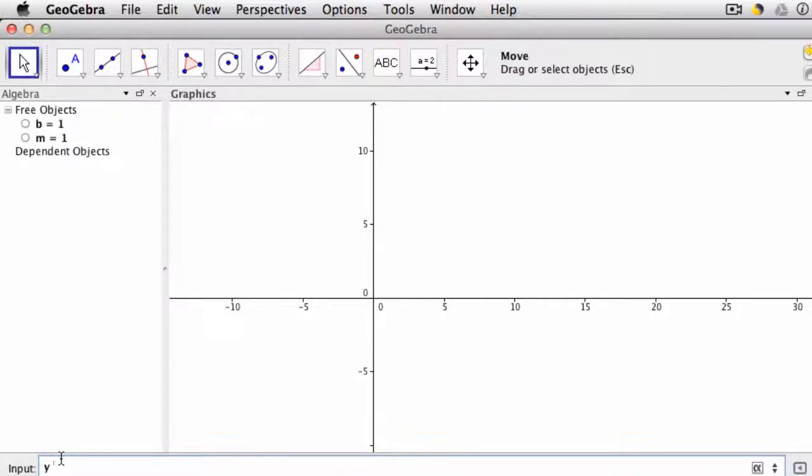Now I can enter y equals m space for multiplication x plus b, and it'll understand that by m and b I'm referring to the two variables that I just defined.